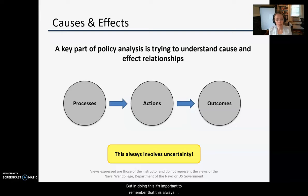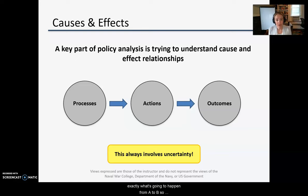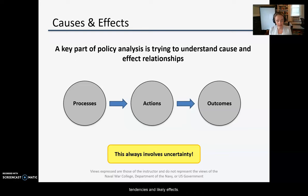But in doing this it's important to remember that this always involves uncertainty. We don't live in a deterministic world where we can usually understand exactly what's going to happen from A to B. So instead we think about this in probabilistic terms and try to come up with an understanding of general tendencies and likely effects.